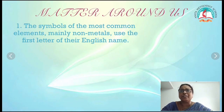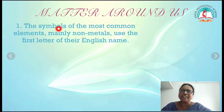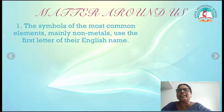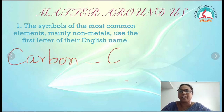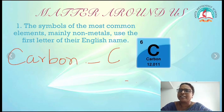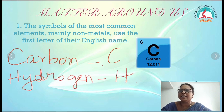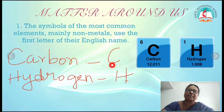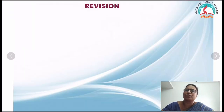Next we are going to learn about the symbols — how to write the symbols. The most common elements, mainly non-metals, use the first letter of the English name. For example, carbon: the first letter is C, so the symbol is C. Hydrogen: the first letter is H, so the symbol is H.